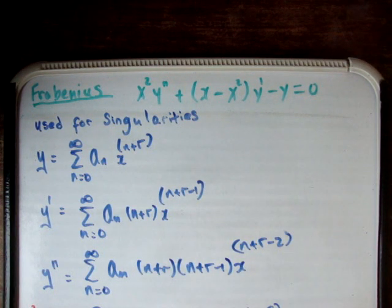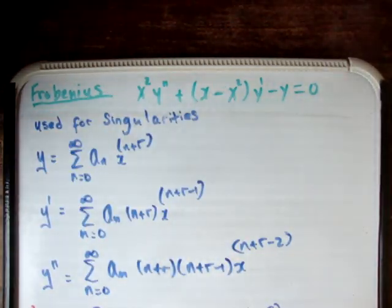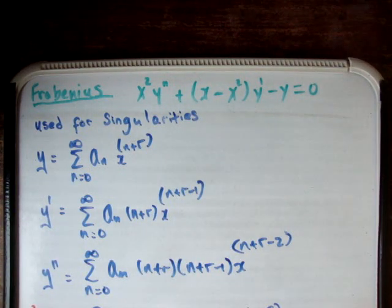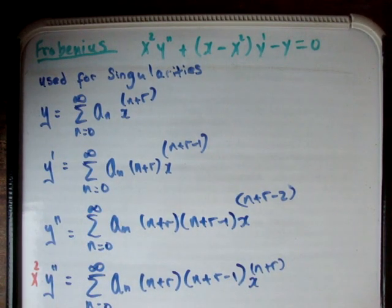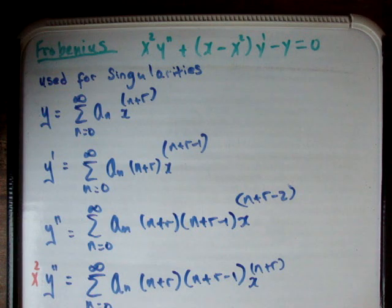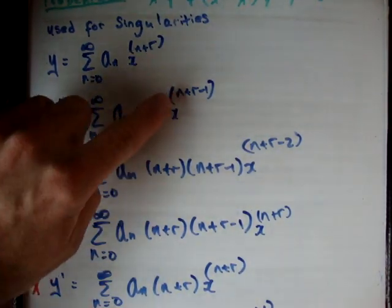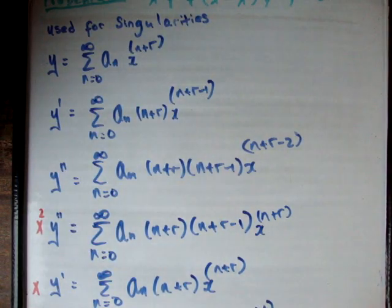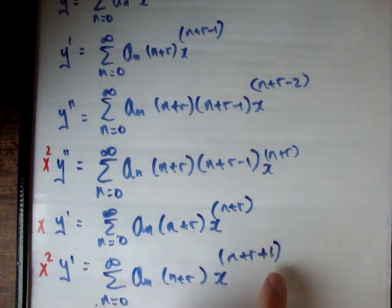Before we do any of that, we need to go back to our equation and multiply in by x squared for y double prime, and x and x squared for y prime. So let's multiply across by x squared for y double prime, and we'll get the following equation — whereby the x squared cancelled and we just get x to the n plus r. Doing a similar process, we multiply y prime by x, and we get the following, whereby we got rid of the negative 1 and now it's just x to the n plus r. And finally we multiply x squared times y prime, adding an extra 1 onto the power.